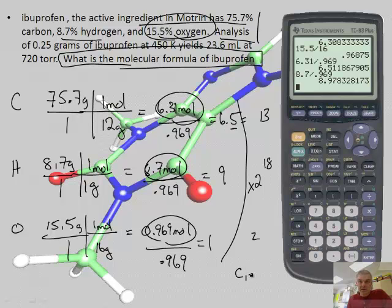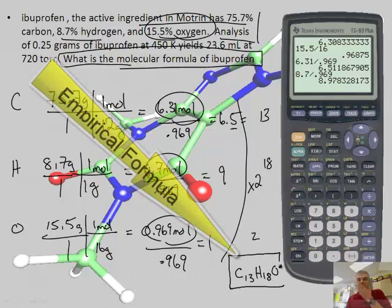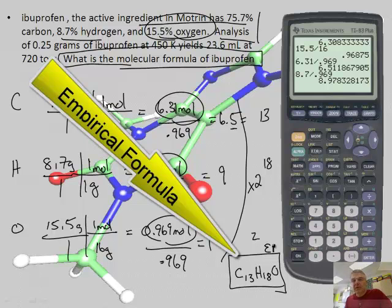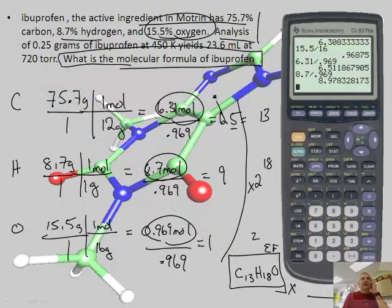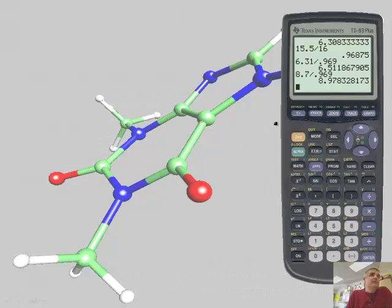So the empirical formula is C13H18O. That's just the empirical formula. The question is, what is the molecular formula? You're going to multiply by some factor. We know some information about the temperature and we can determine the molar mass and compare it to this.